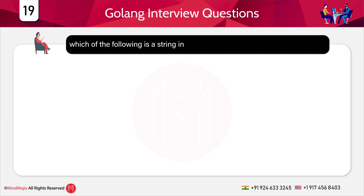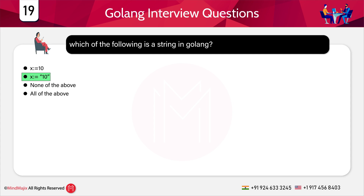Which of the following is a string in Golang? Options: a) x = 10, b) x = "10" (in quotes), c) none of the above, d) all of the above. The answer is b) x = "10". Even though 10 looks like an integer, because it is inside double quotes it is treated as a string in Golang.